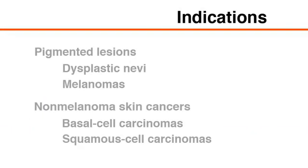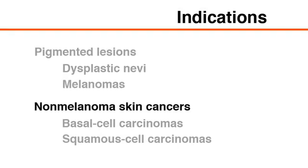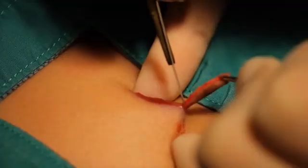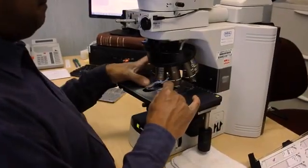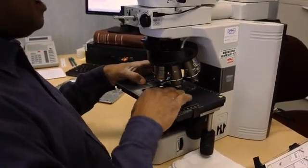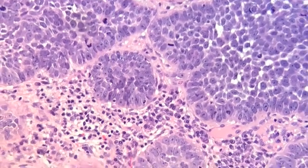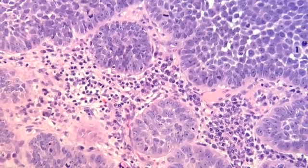Elliptical excision of the skin is typically performed on pigmented skin lesions, such as dysplastic nevi and melanomas, and non-melanoma skin cancers, including basal cell carcinomas and squamous cell carcinomas, for which the diagnosis has already been established by prior shave or punch biopsy. In lesions with a high clinical suspicion of cancer, an elliptical excision may serve as a single-stage diagnostic and therapeutic intervention. Elliptical excision specimens allow for histopathological examination of the skin, including the epidermis, dermis, and subcutaneous fat, permitting determination of lesion depth and demonstration of clear margins.